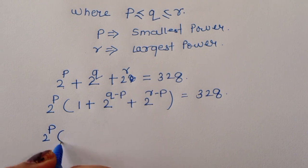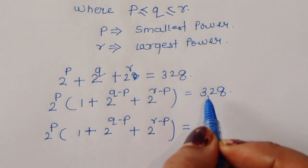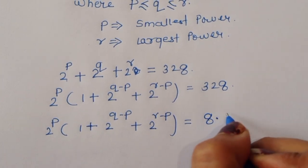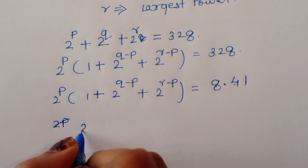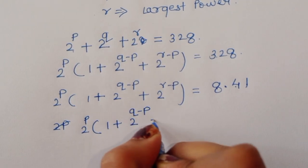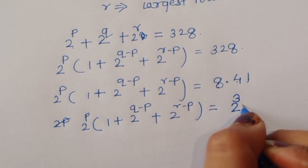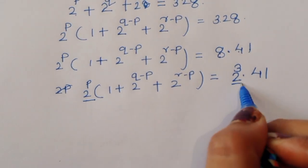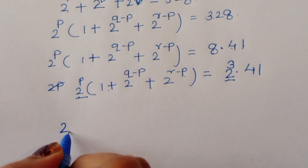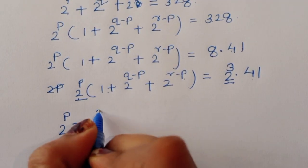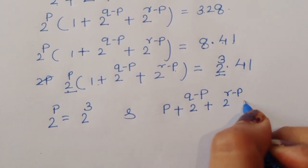Now, 328 can be factored as 8 times 41. So we can write 2 power P times (1 plus 2 power Q minus P plus 2 power R minus P) equals 2 power 3 times 41. Comparing both sides, 2 power P equals 2 power 3, and 1 plus 2 power Q minus P plus 2 power R minus P equals 41.